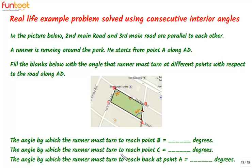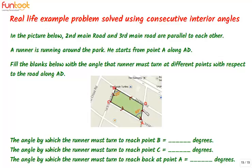The second blank is the angle by which the runner must turn to reach point C. At B, the runner takes a turn and reaches point C. The third blank is the angle to reach back at point A. After C, the runner turns and reaches point A. Importantly, after reaching point A, the runner is standing there — he is not taking a turn in the direction of AD. Let's solve the question.